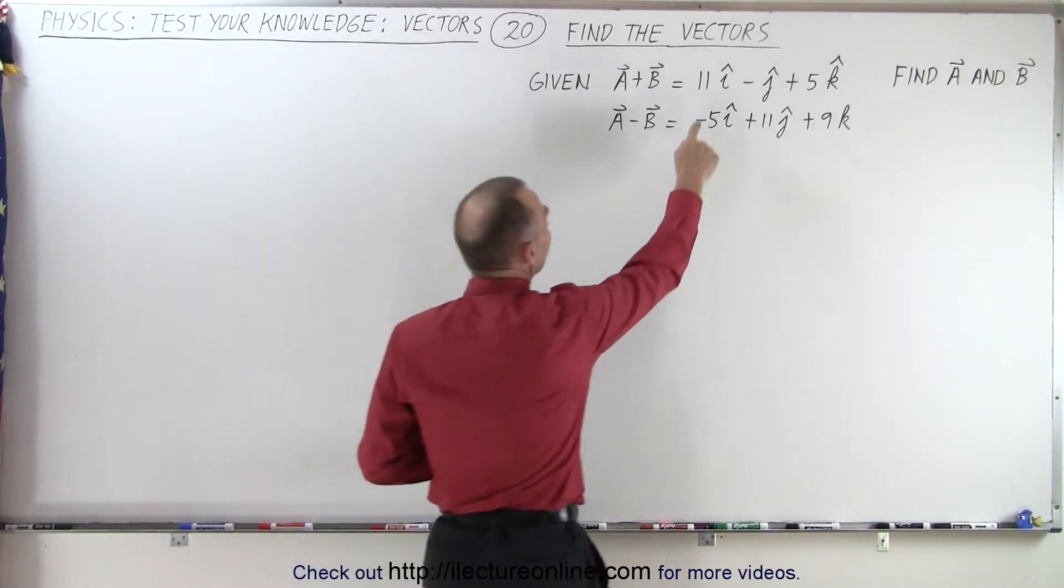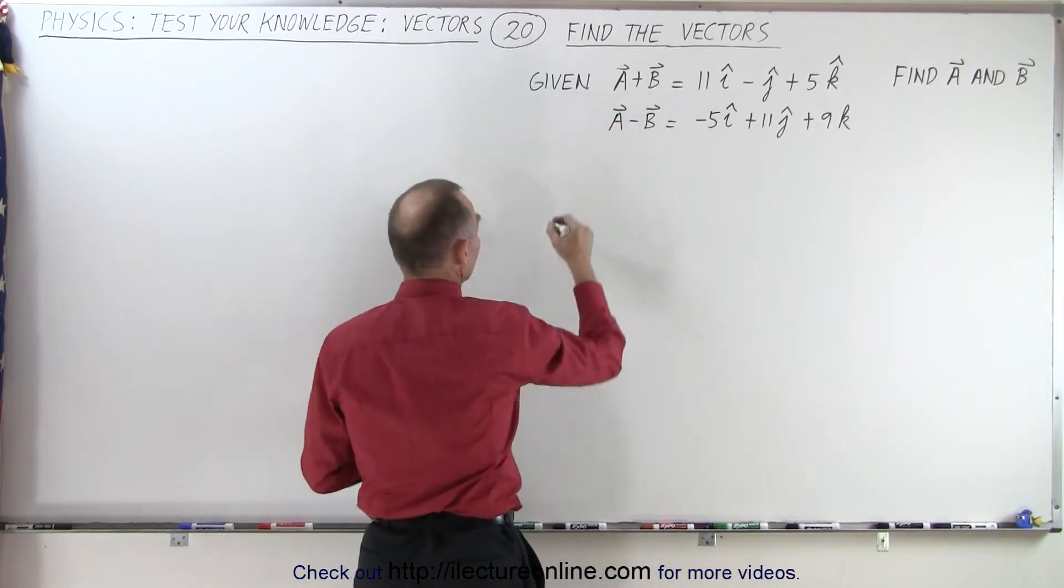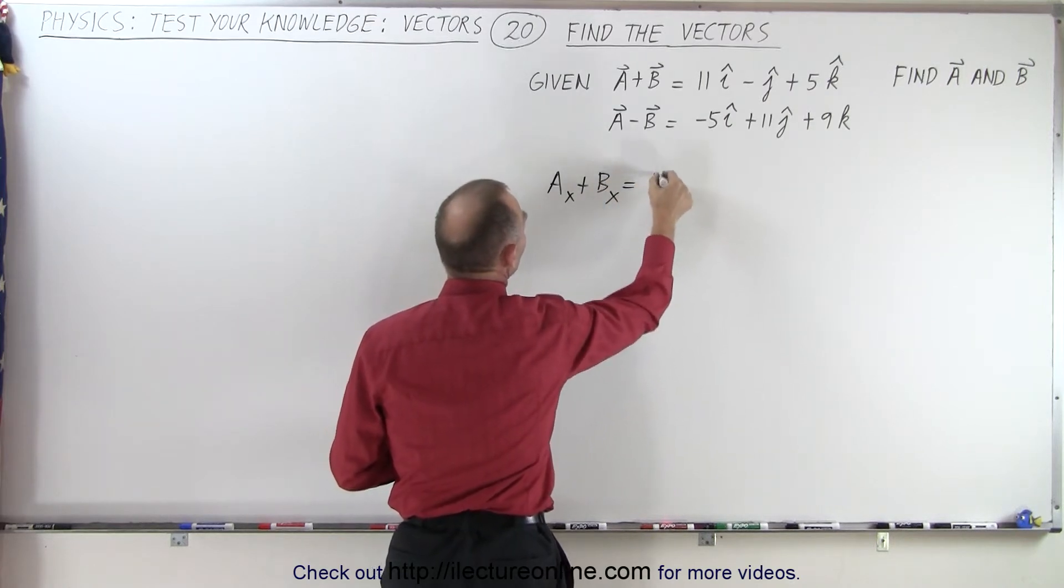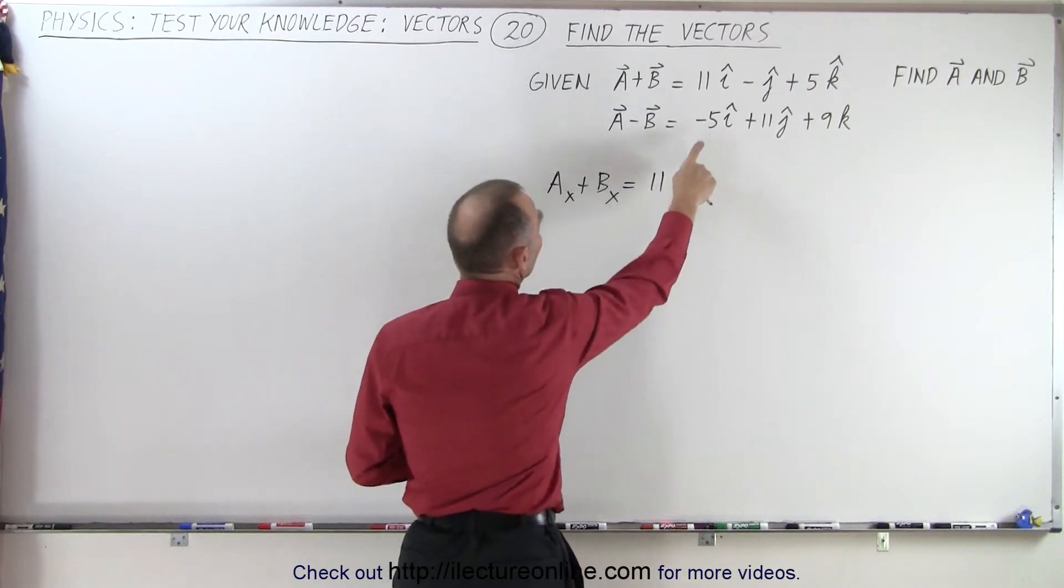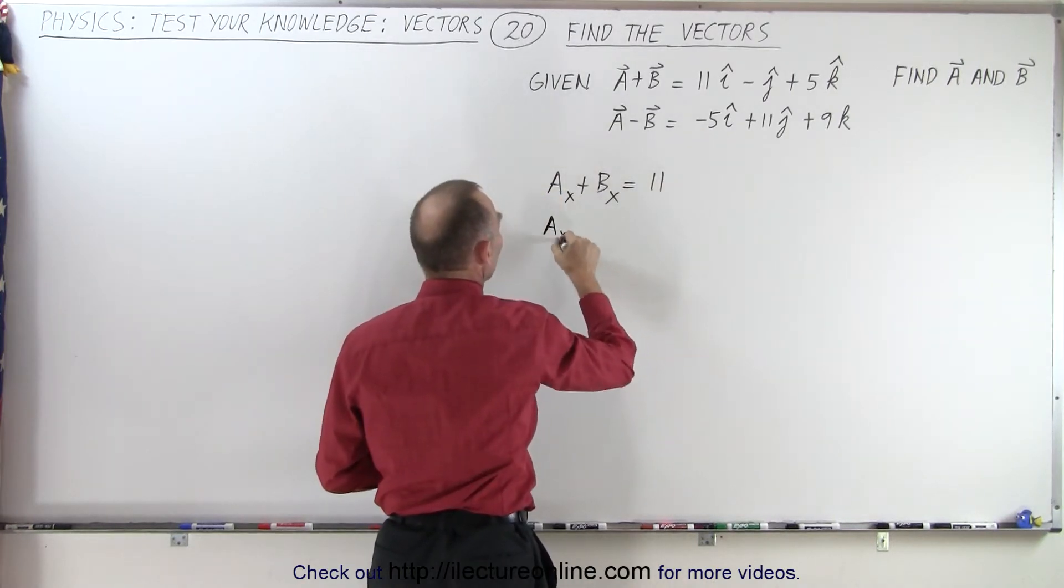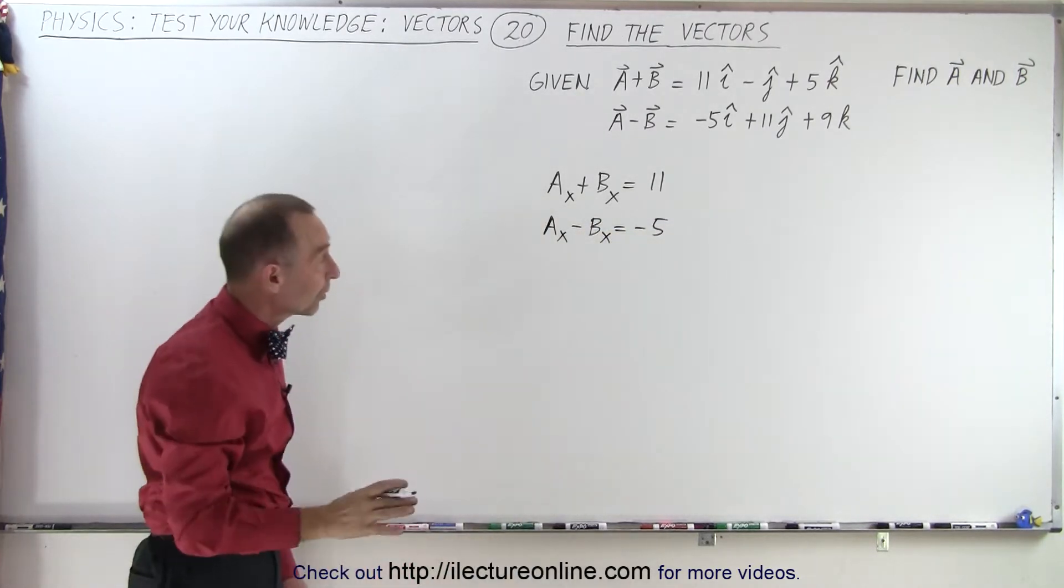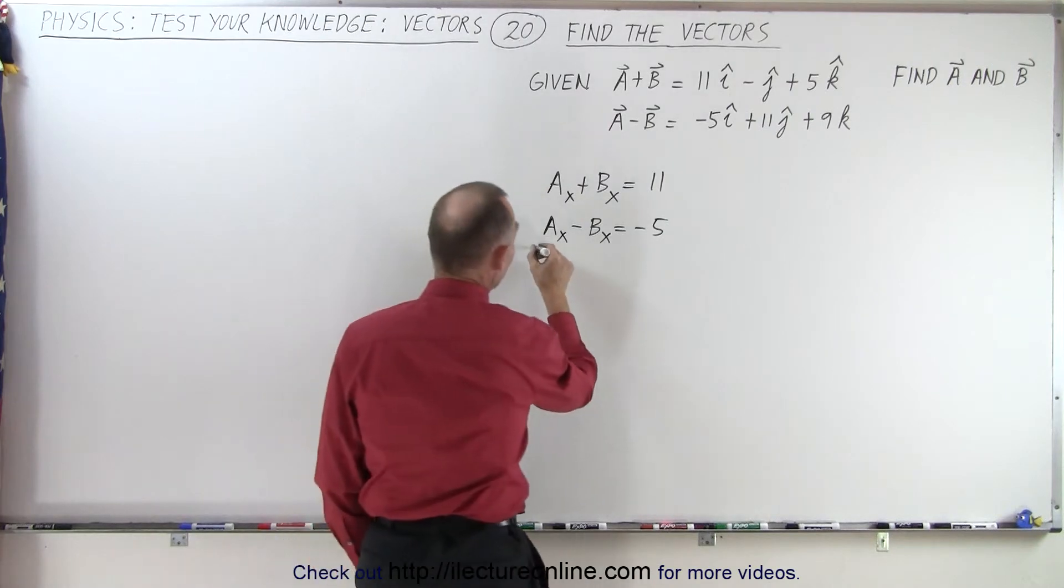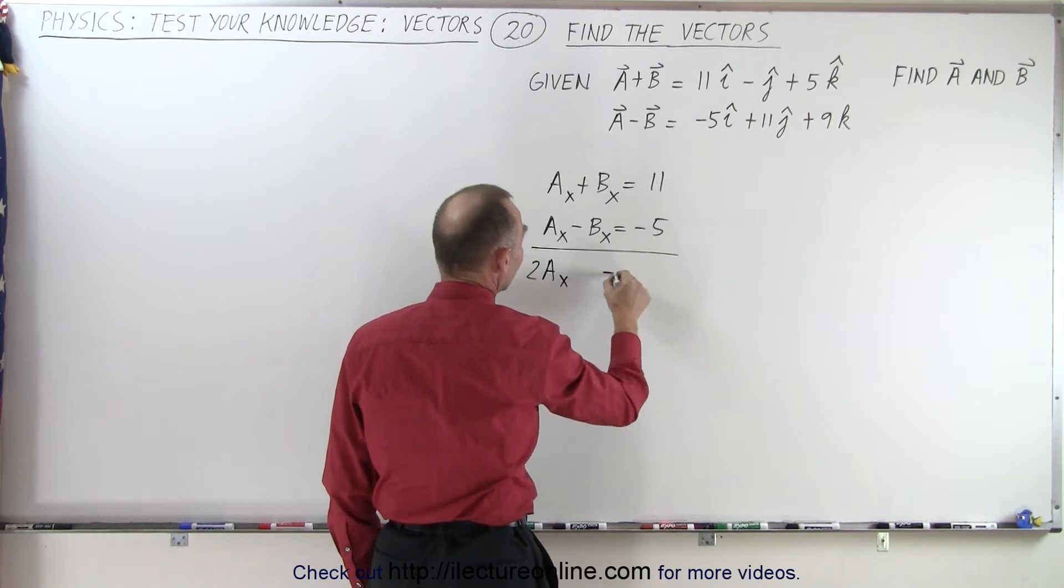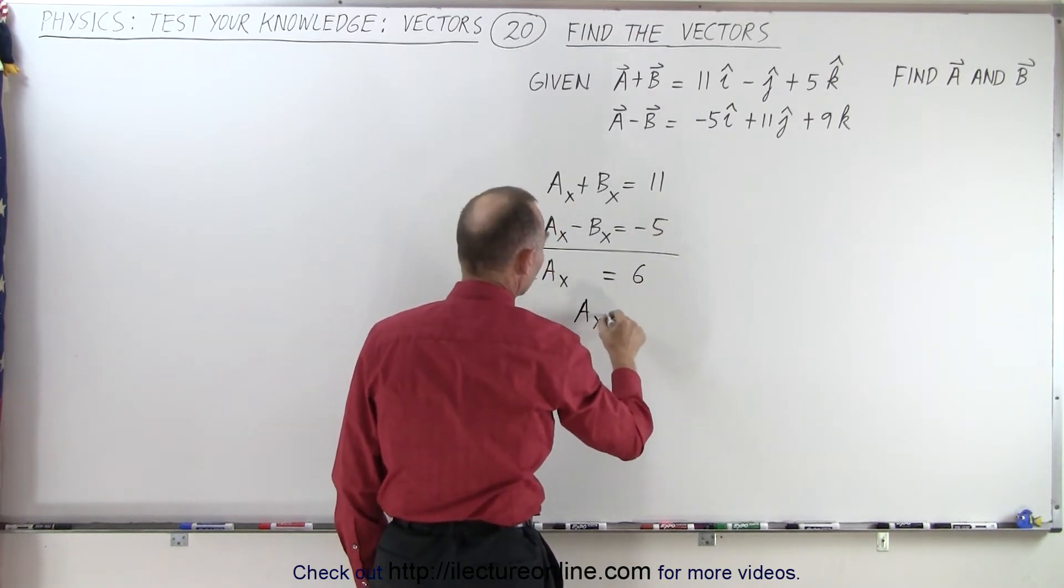Well we should realize that 11 is the sum of the x components of the two vectors. In other words, a sub x plus b sub x is equal to 11, and we're told that the difference, a sub x minus b sub x, is equal to minus 5. Now if we take those two equations and we add them together, look what happens. We get two a sub x, the b sub x cancels out, is equal to 11 minus 5 which is 6, and therefore a sub x is equal to 3.